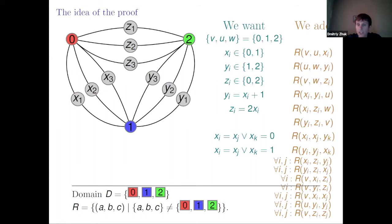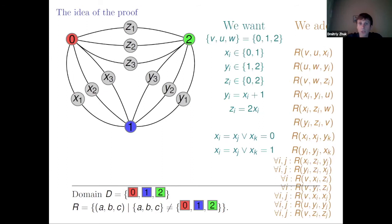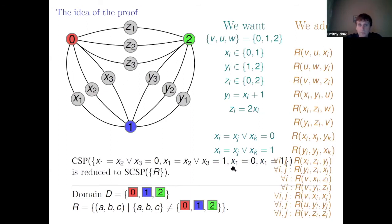I need to ensure that V, U, and W are actually different. I just add all constraints that are always true — for every I and J, I add that Xi, Zi, and Yj cannot all be different. It turned out this is enough: after adding those constraints, in any surjective solution V, U, and W are all different. So somehow I was lucky, and I proved that CSP over this constraint language reduces to surjective CSP over R.